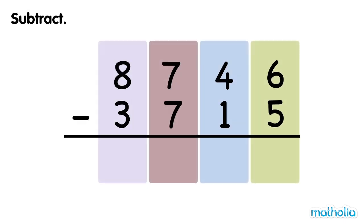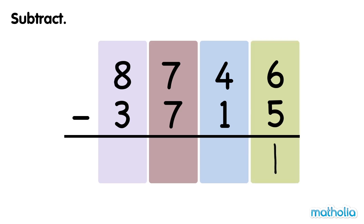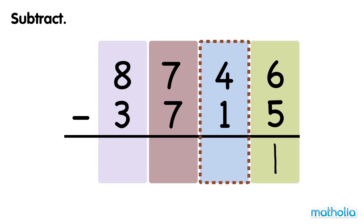Let's find 8,746 minus 3,715. Subtract the ones. 6 ones minus 5 ones equals 1 one. Subtract the tens. 4 tens minus 1 ten equals 3 tens.